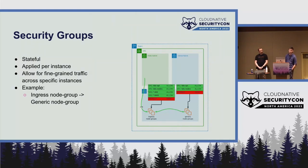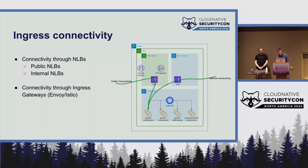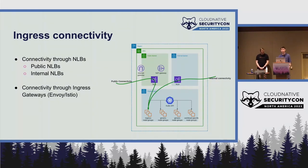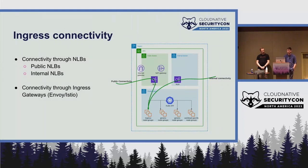Security groups also allow you to use other security groups as sources or destinations, giving a higher-level syntax. For ingress connectivity we deploy NLBs into the public and internal subnets. Public NLBs handle internet connectivity; internal NLBs — IPed on the 10/8 space — handle traffic from inside Splunk. These NLBs target the ingress node group, where Envoy gateways terminate connections and proxy traffic upstream into the cluster.